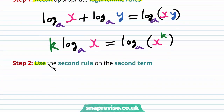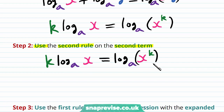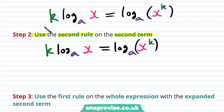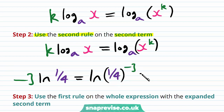Our second step is to use the second rule on the second term. Our second rule is that k times the log base a of x is equal to the log base a of x to the power of k. And so our minus 3 times the natural logarithm of 1 quarter is going to be the same as the natural logarithm of 1 quarter to the power of minus 3. And this gives us the natural logarithm of 64.